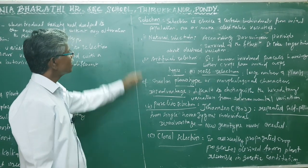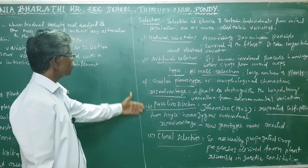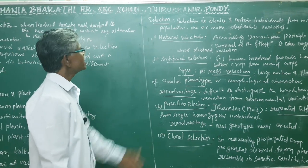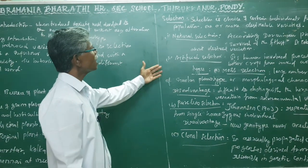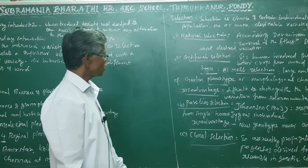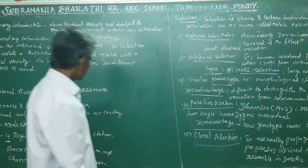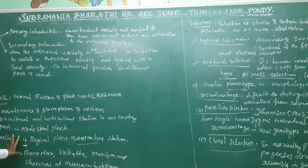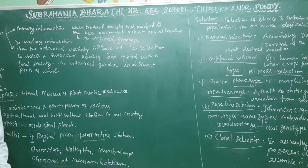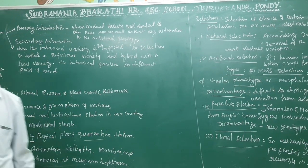So, selection types are: natural selection, artificial selection, pure line selection, and finally clonal selection. You have to prepare each of these topics — everything is for 2-mark or 3-mark questions in your board examinations. That's all. Thank you.